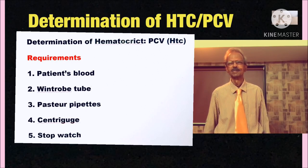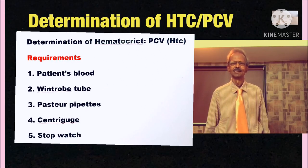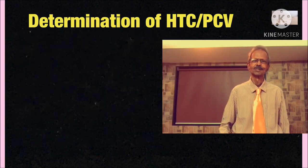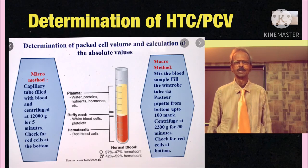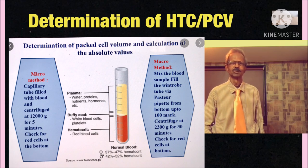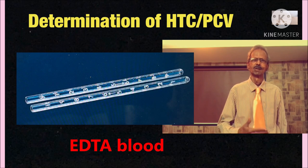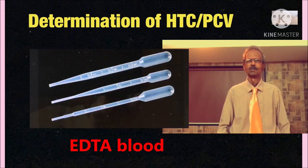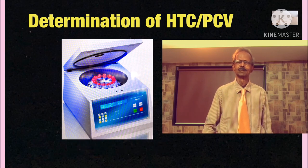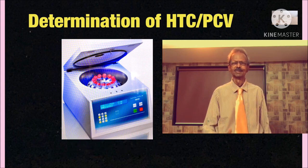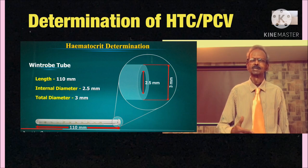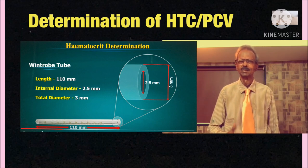The next experiment is determination of hematocrit PCV. In this experiment, packed red blood cells are measured. And the requirements are patient's blood, Wintrobe tube, Pasteur pipette, centrifuge and stopwatch. The specific description of Wintrobe tube is placed on the left hand side.